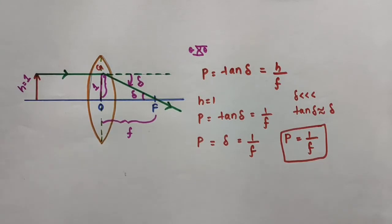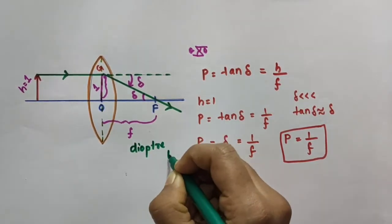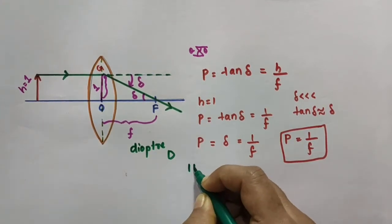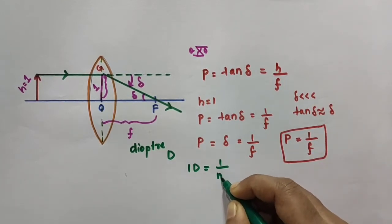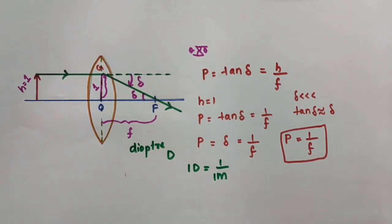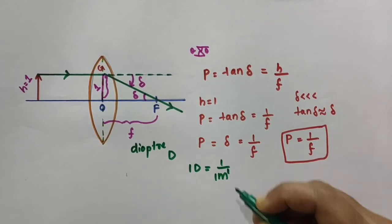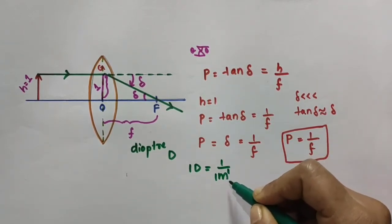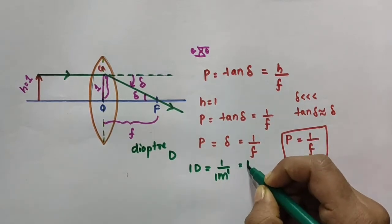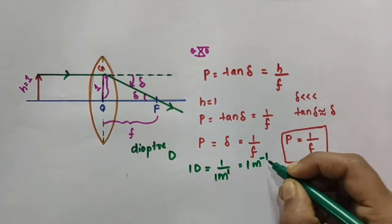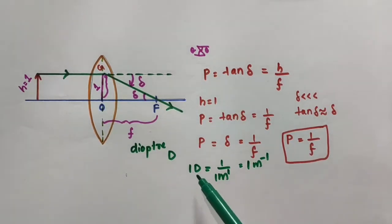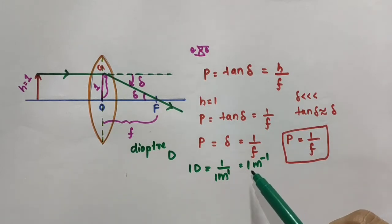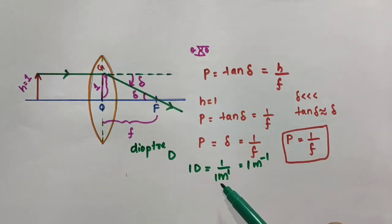The SI unit of power is the diopter, represented by capital letter D. From the expression P = 1/f, we can write: 1 diopter = 1 / (1 meter) = 1 meter⁻¹. So one diopter is defined as the power of a lens of focal length 1 meter.